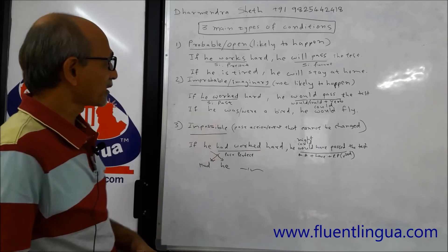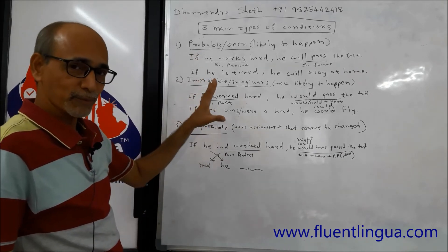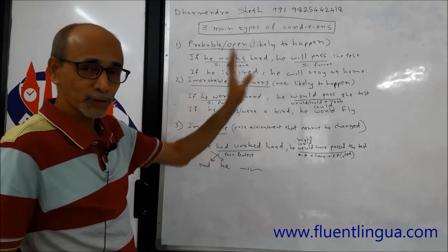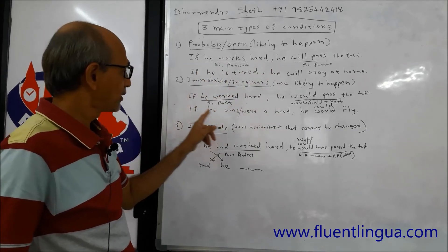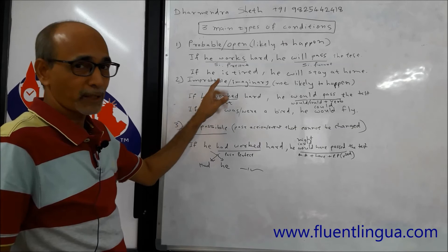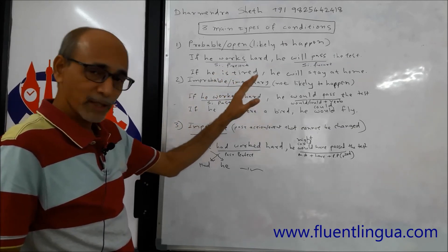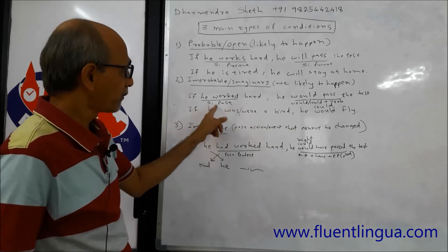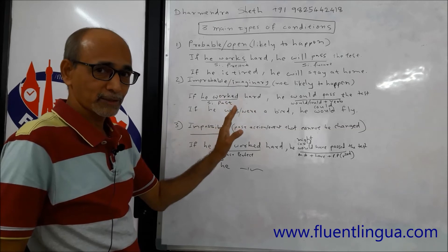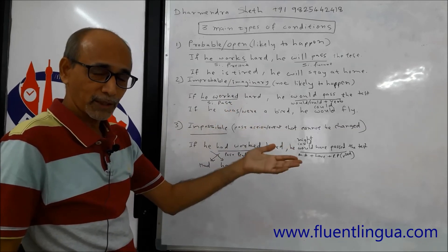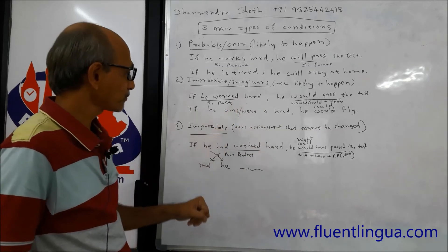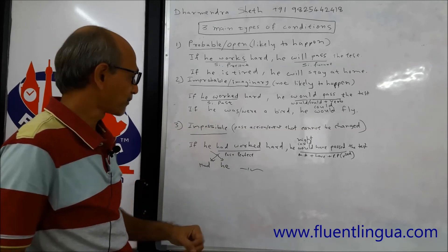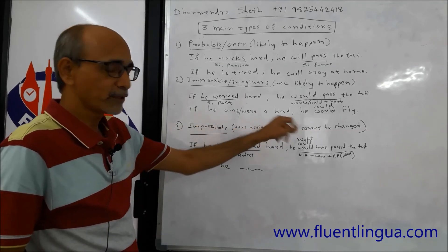Let's do a revision. Three main types of conditions. First: Probable or Open — likely to happen. Simple present tense in the condition, future tense in the result. Example: if he works hard, he will pass the test. Second: Improbable or Imaginary — not likely to happen. We use the past tense form. Example: if he worked hard, he would pass the test. If he was a bird — it means he is not a bird. If I were a millionaire — it means I am not a millionaire. So: if he were a bird, he would fly or he could fly.